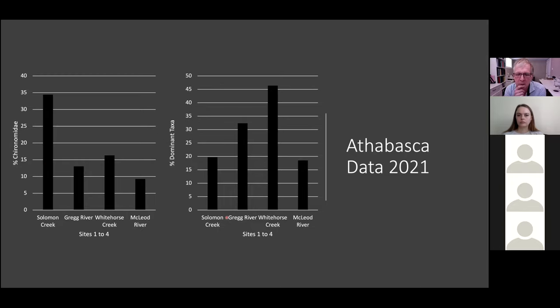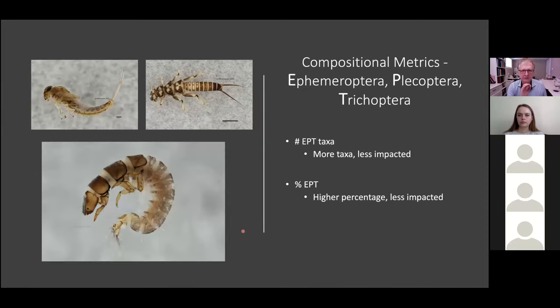Dominant taxa. This is a useful one for thinking about, is there something that is blooming, in essence, faunistically in an area? Whitehorse Creek is shocking - over 45% of what you collected is one taxa, one genus. Greg River is well down there. Solomon Creek is down there. McLeod River is again bringing up the rear. What that's saying is your taxa is distributed relatively evenly.